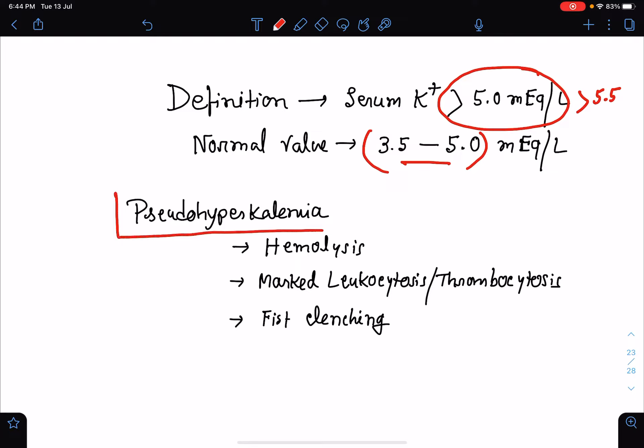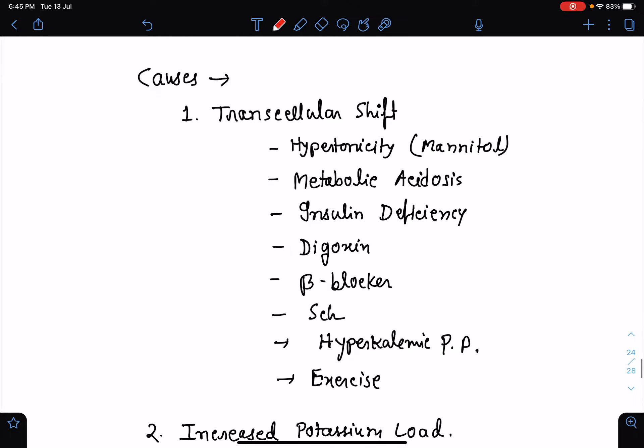Now there is something known as pseudo-hyperkalemia. As the name suggests, pseudo-hyperkalemia means there is an artificial rise of serum potassium without any real hyperkalemia. It may be as a result of hemolysis or it may be due to marked leukocytosis or thrombocytosis. Lysis of leukocytes or thrombocytes will result in release of intracellular potassium into the serum, thereby leading to an artificial rise in the serum potassium level. Due to some technical errors also, there may be pseudo-hyperkalemia. For example, repeated fist clenching while taking the sample for serum potassium measurement may result in pseudo-hyperkalemia.